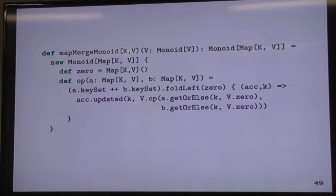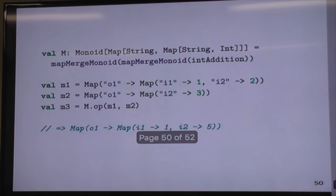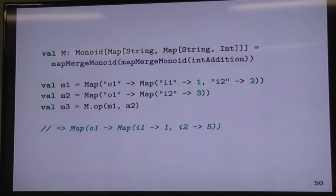And then the book also gives us this example which is probably a little more exciting which is a map merge monoid. So given a monoid for some type V where that type is the value type in a map we can produce a monoid that will merge two maps and merge the values in two maps.